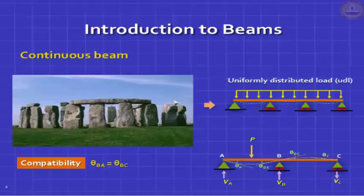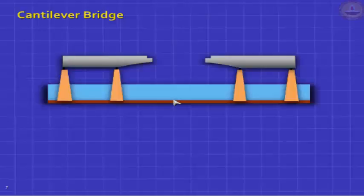You also get reactions, and it is quite likely that the reaction at C will be an uplift. This is very important to note. When you go to a construction site, be careful walking near the edge — a plank that may not be nailed properly can lift up. Check the boundary conditions. Additionally, equilibrium requires the total load P to equal the sum of all reactions.